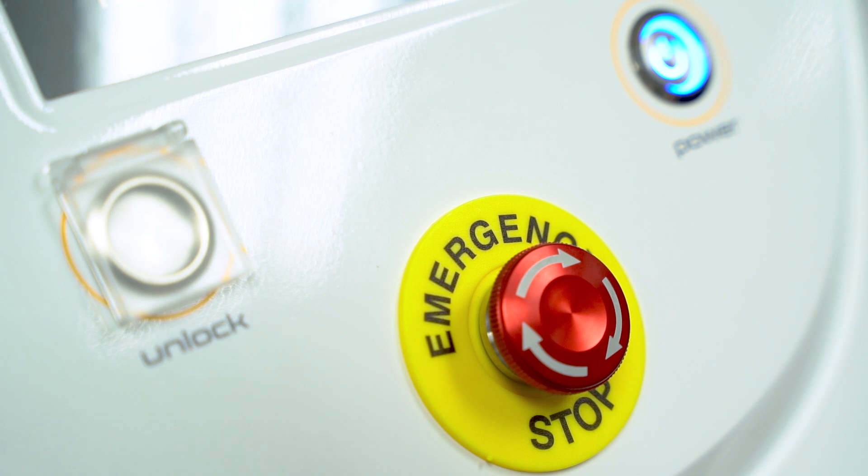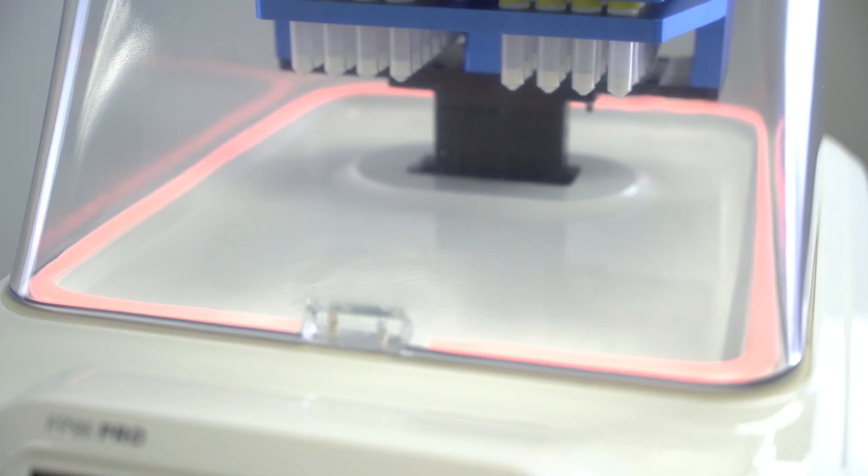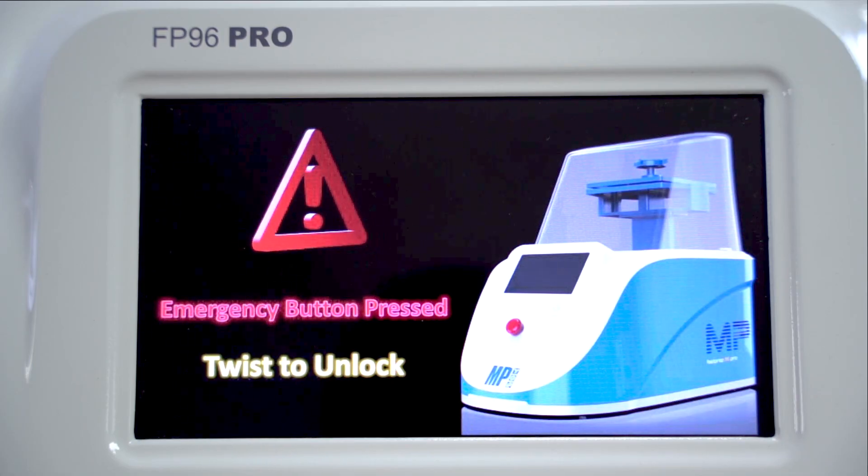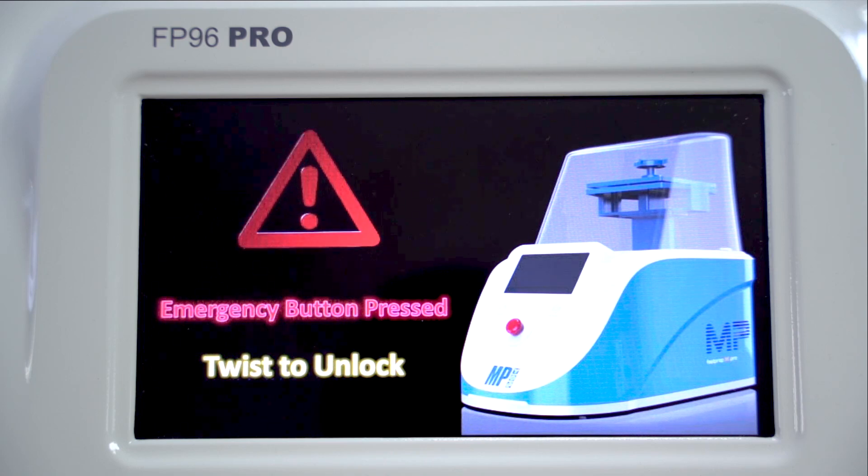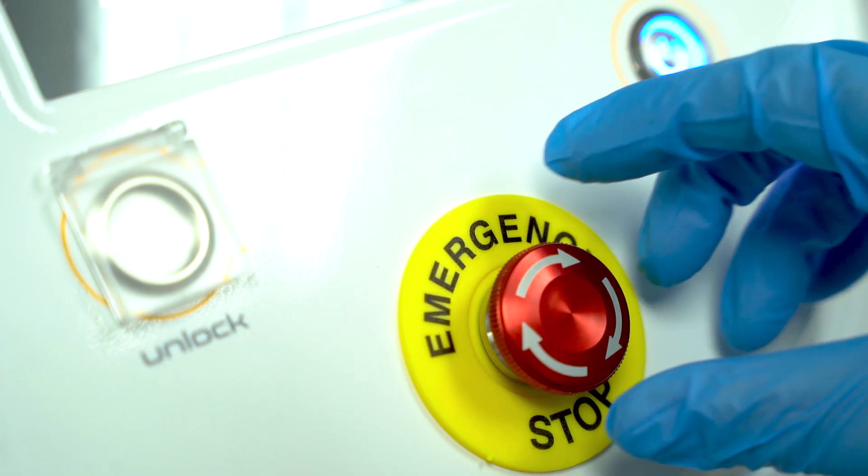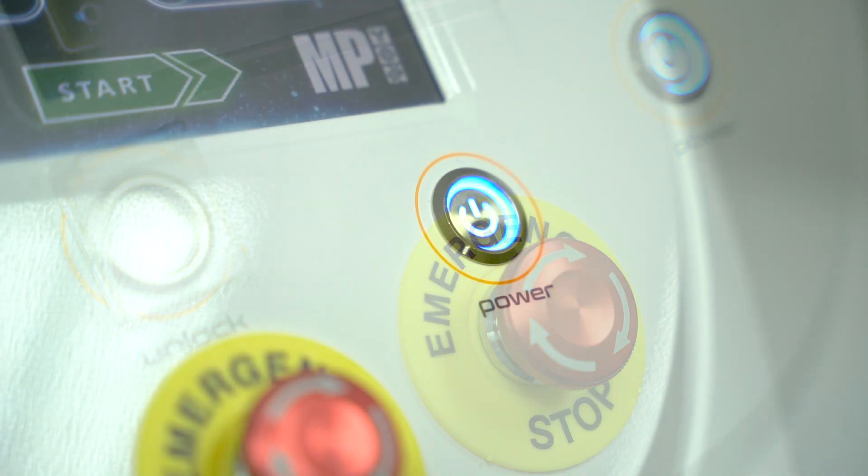This critical feature is intended to prevent accidents, injuries, or damage to the equipment. An emergency pop-up screen will appear. To reset the machine, simply twist the knob clockwise.